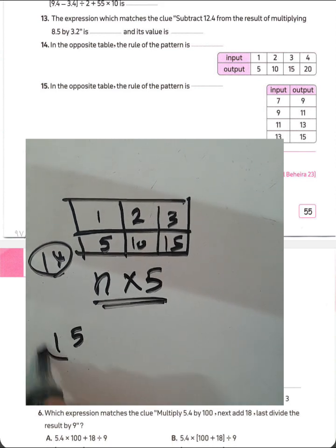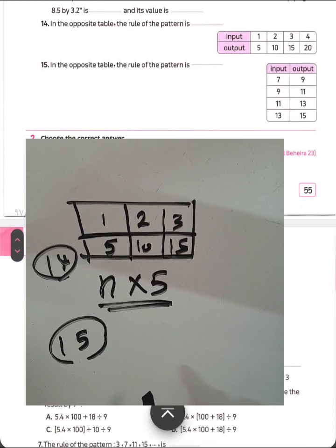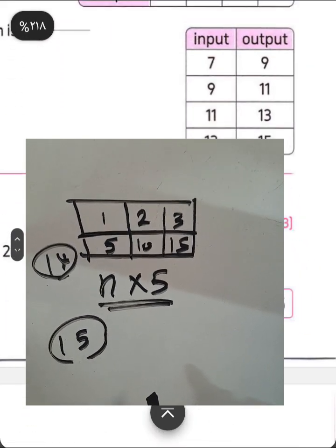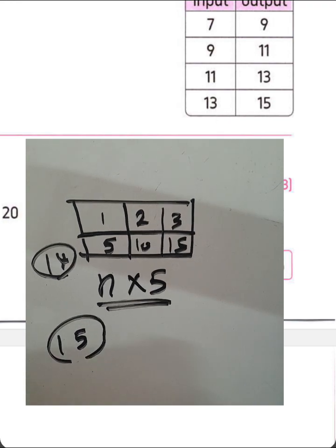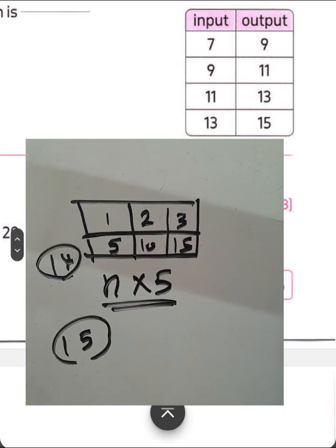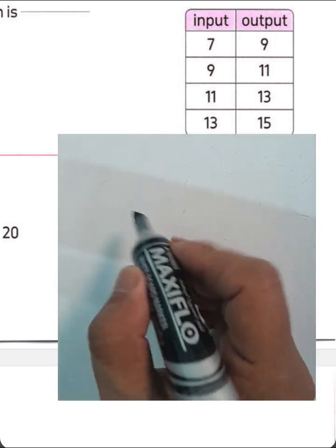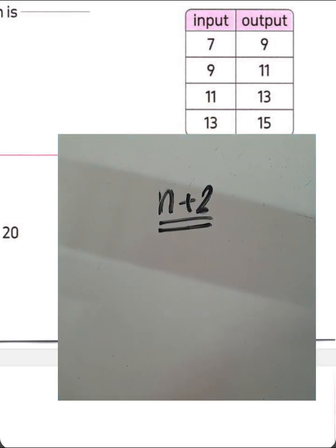What about question number 15? In the input/output table: input 7 gives output 9, input 9 gives 11, input 11 gives 13, input 13 gives 15. We know 7 plus 2 equals 9, 9 plus 2 equals 11, 11 plus 2 equals 13, 13 plus 2 equals 15. The rule is N plus 2.